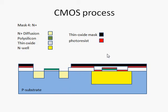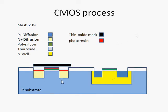Now let's see how the P-well active areas for the P-MOS transistors are formed. We use a P-plus mask this time. The areas in which the P-plus diffusion is to be done are patterned. Like the N-plus diffusion, the dopants are first implanted on the surface of the N-well and then driven into the N-well. You then have your P-plus regions — your source and drain, which are again interchangeable.